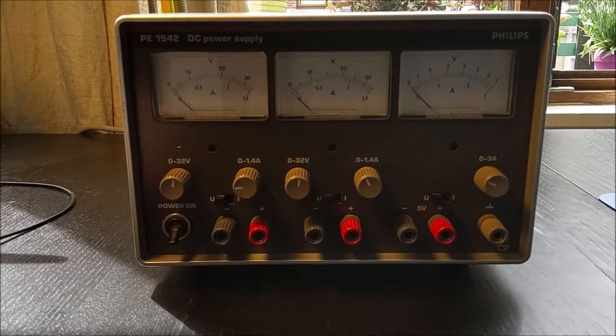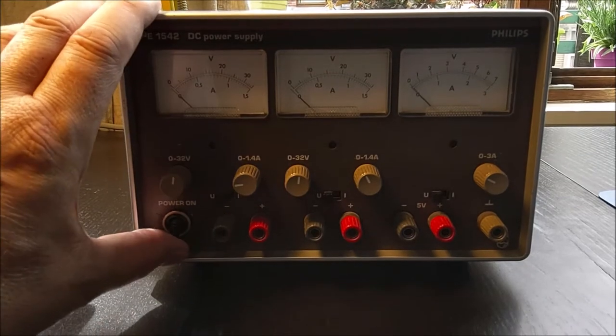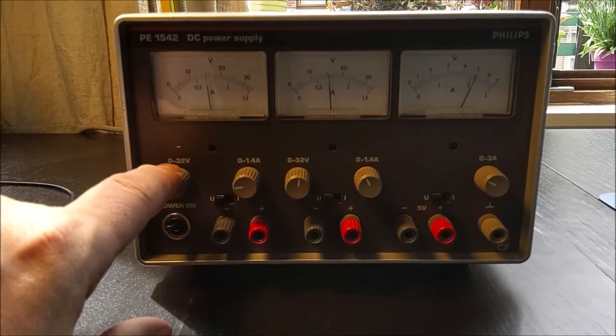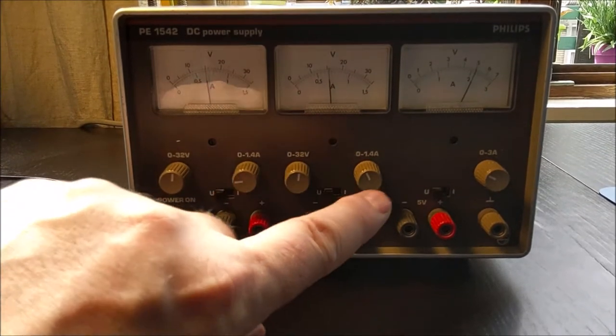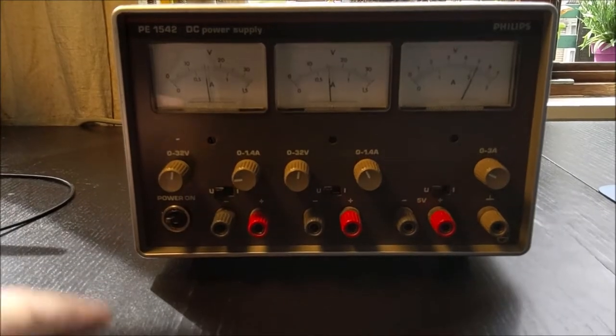I have this Philips power supply from the 80s and it's in good condition. All three channels work. It has two 32 volt channels up to 1.4 amps and a fixed 5 volt channel that goes to 3 amps with constant voltage or constant current regulation.